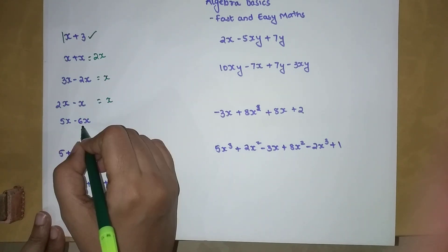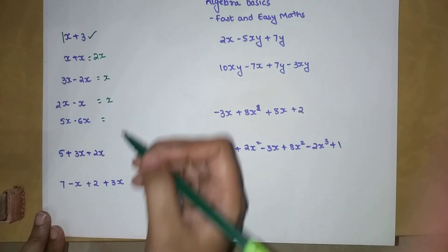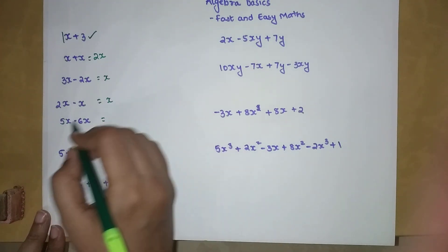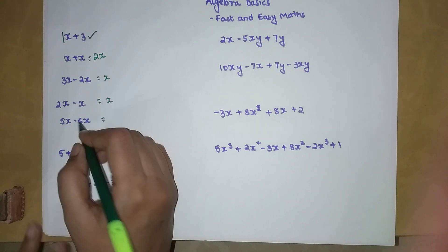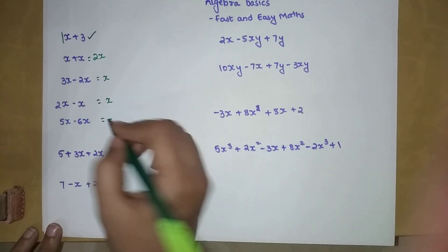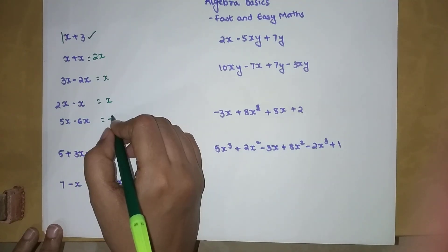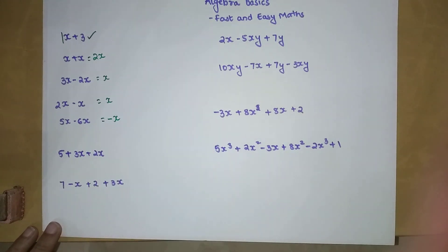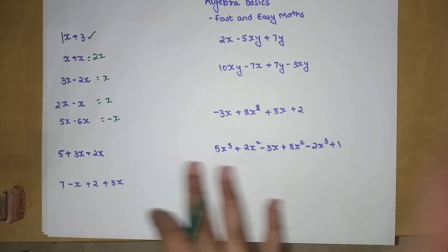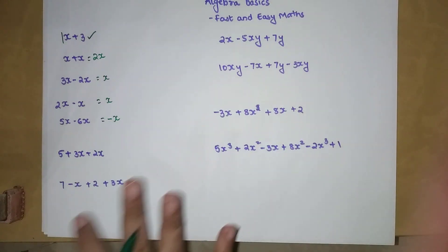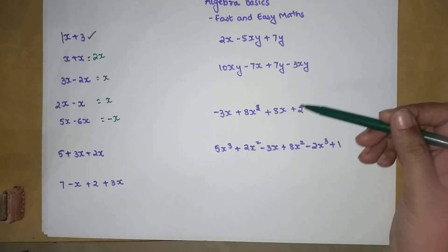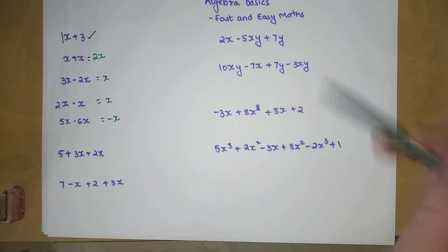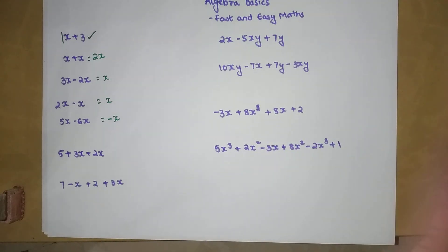Now 5x minus 6x: 5 minus 6 gives us negative 1, so we get minus 1x, or we simply write it as minus x. This is super simple! If you've understood this you'll be able to solve the rest easily. You can take a pause and try solving them to see if your answers match.